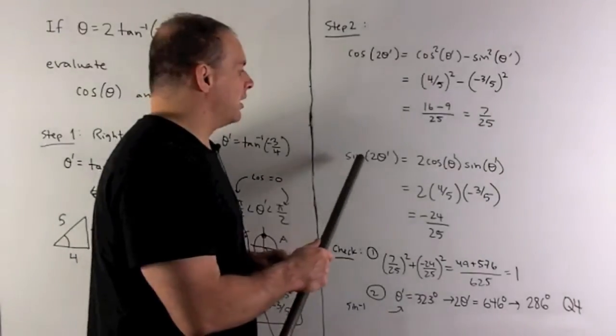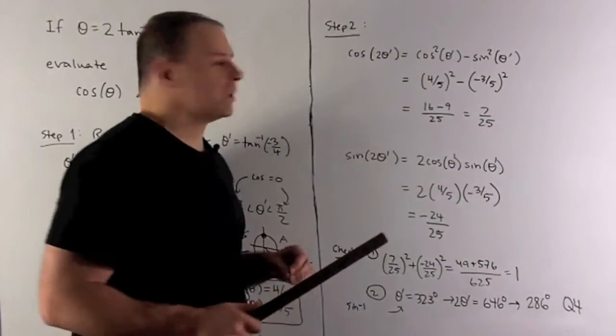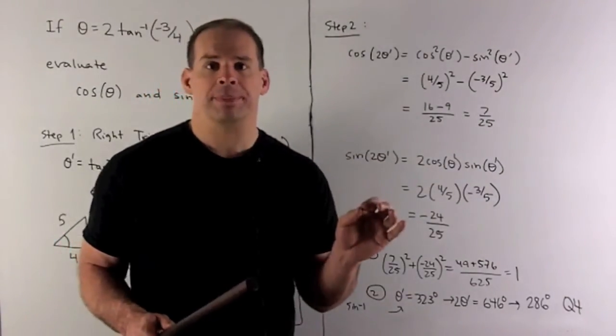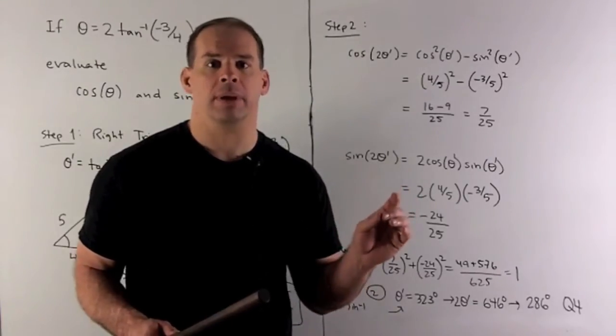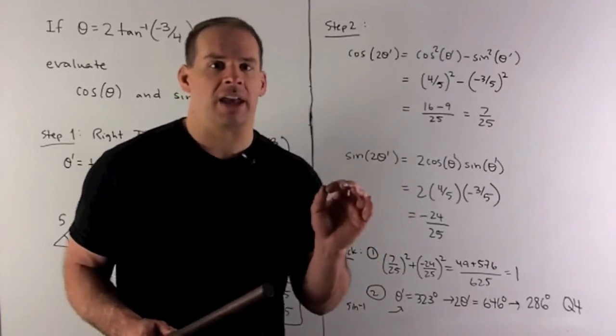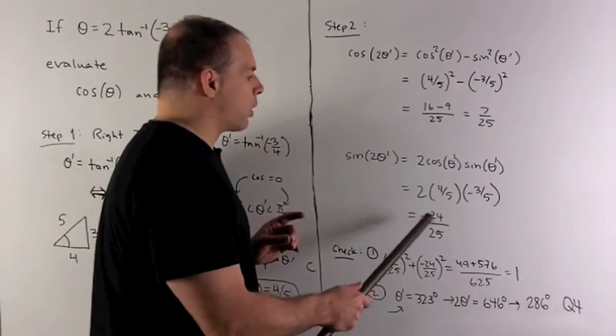Next, we'll have sine of two times theta prime. So we have double-angle for sine. It's going to be two times cosine theta prime, sine theta prime. Put our cosine and sine in. We get minus 24 over 25.